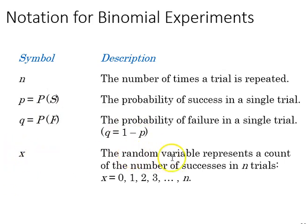And X, the random variable represents a count of the number of successes in N trials. If we have 10 coin tosses, then the N would be 10, and if success is heads, then the X might be 5, 5 heads coming up.